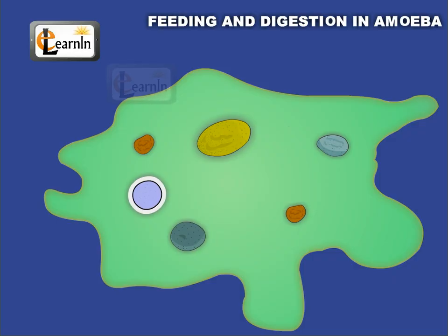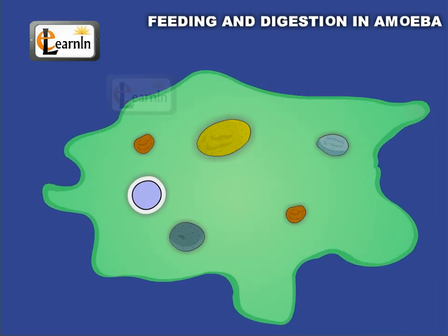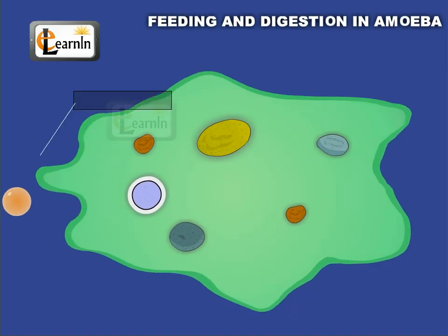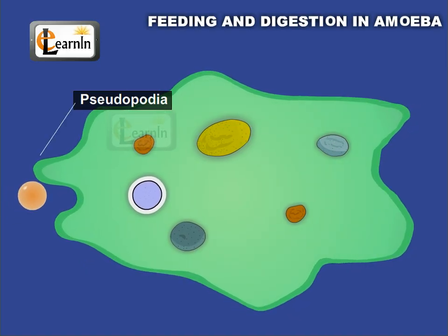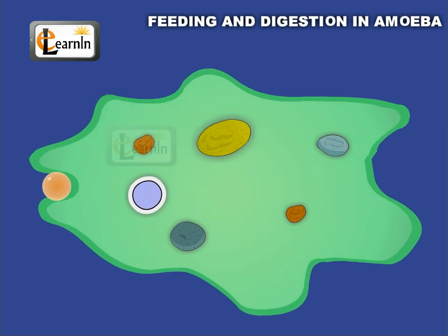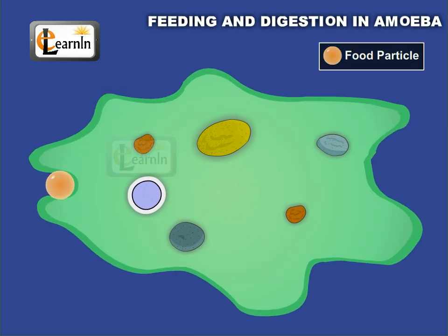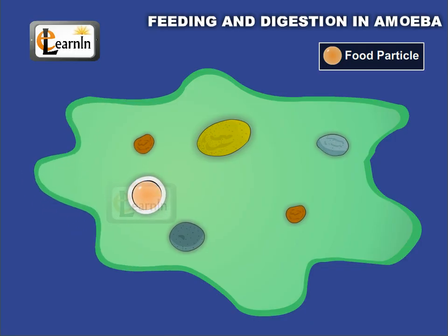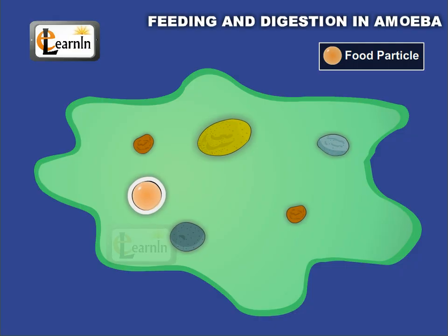It changes its shape and position constantly. It projects out one or more finger-like projections called pseudopodia, which it uses to trap other microscopic organisms or food particles. The food is trapped in a food vacuole, and gradually the food is digested and absorbed.